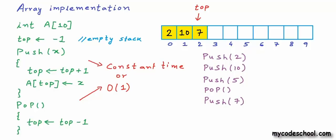One important limitation: we can push onto the stack only while the array is not exhausted. When the stack consumes the whole array, top equals the highest index, and a further push will result in an overflow. This is a limitation of array-based implementation. To avoid overflow we can create a large enough array, assuming the stack won't grow beyond a certain limit. In most practical cases a large enough array works, but we must still handle overflow in our implementation.